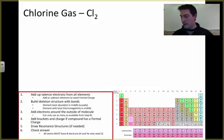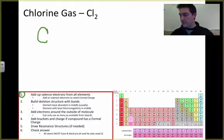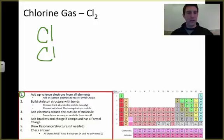Step number one tells us to add up the valence electrons for all of the elements. We've got chlorine and chlorine, so we've got two chlorines.